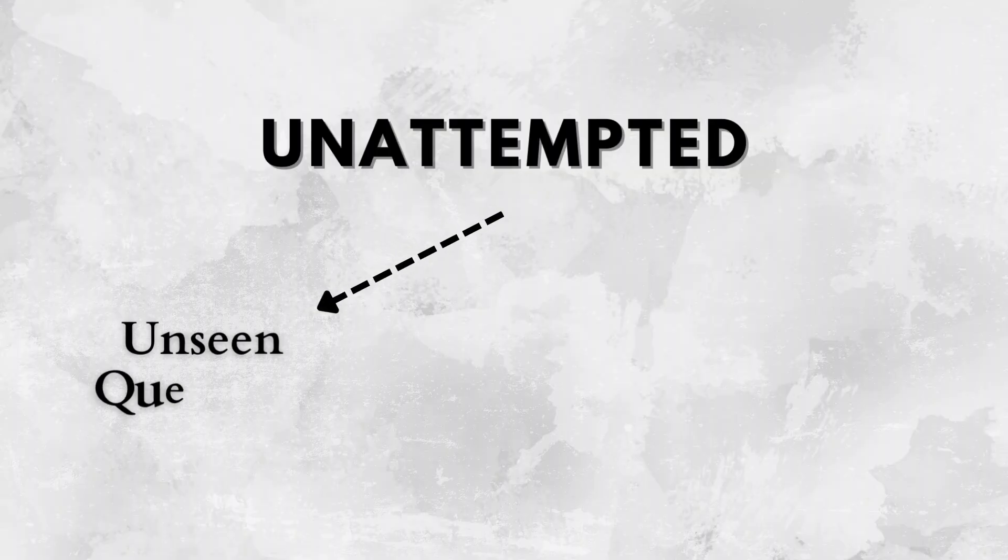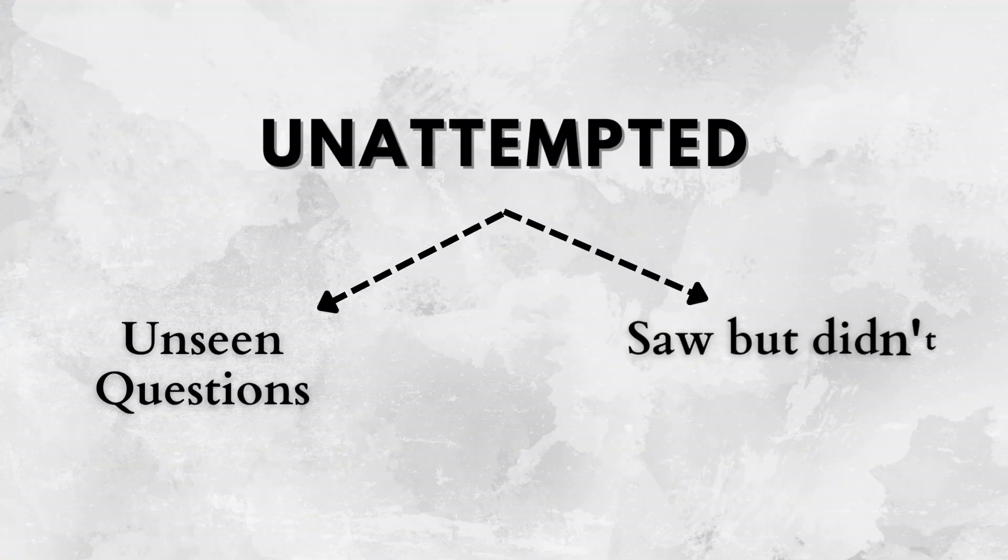We'll start with increasing the attempt rate. When you attempt a mock, there are only two kinds of questions you might not have attempted: first, questions you did not even see — what we call unseen questions — and second, questions you saw and tried to attempt but could not. The number of unseen questions is the biggest parameter. If there are questions you did not even see in the mock, that's the biggest pain point. Ideally, you should be able to see 100% of the questions by the time you are taking your 10th mock. If not, your attempt strategy has a flaw.